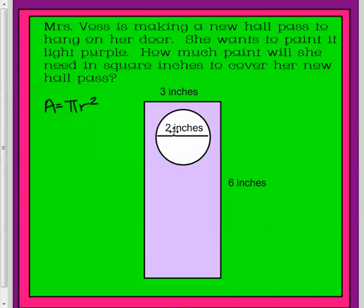Remember, to find the area of the circle, it's pi times radius squared. So you have diameter. Be careful. Alright, I'm going to show you what I did, so make sure that you've already tried this.